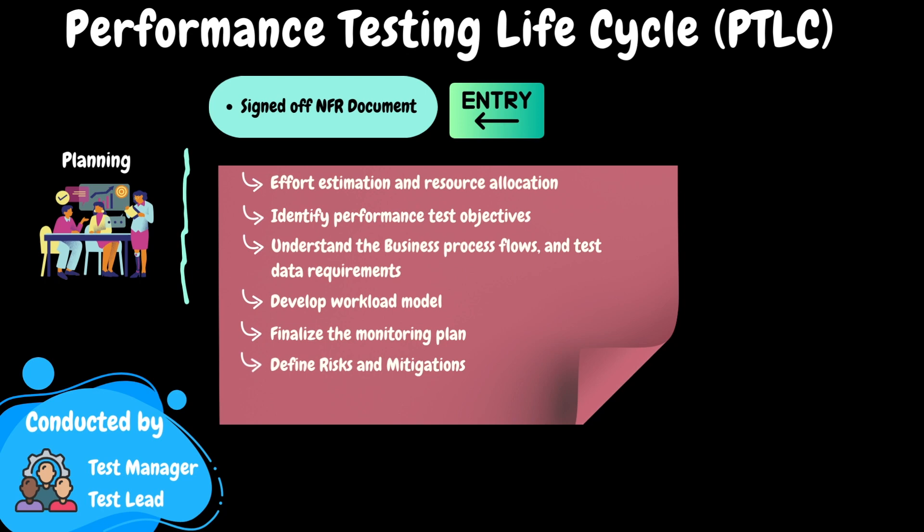This discrepancy may prevent us from ensuring that the application's performance attributes — such as speed, scalability, and stability — closely mirror those of the actual production settings. To mitigate this risk, the plan could involve scaling down the volumes to align with the testing environment's capabilities. During this phase, it is essential to identify and define such risks, and the project team should subsequently acknowledge and accept them.